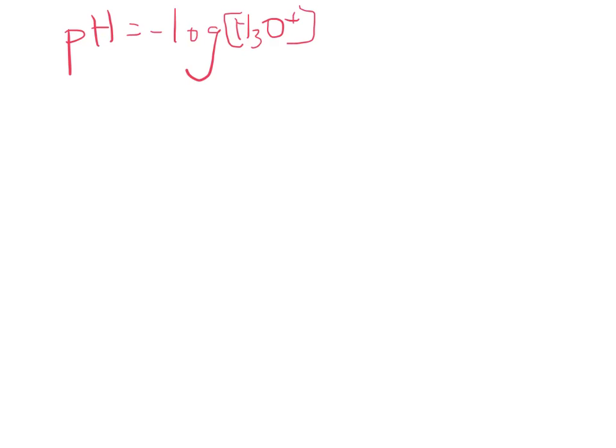Essentially what this is doing is taking the exponent on H3O+ and turning it into the number. So if H3O+ was 1 times 10^-3, then pH would be 3. pOH is the same thing, except for bases. So that's the negative log of OH-.